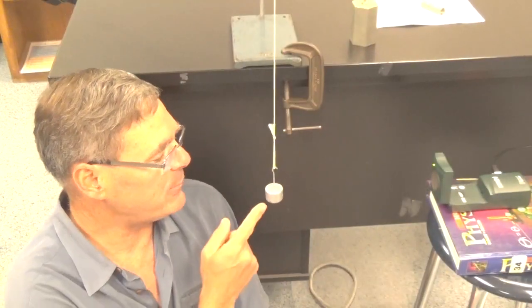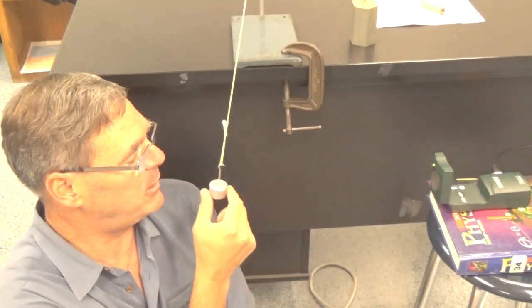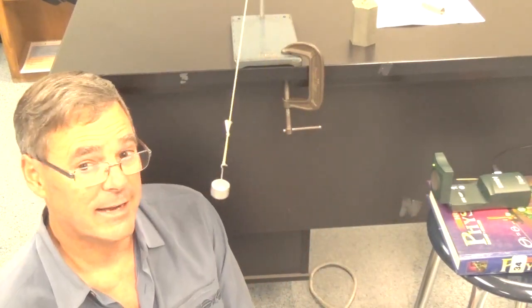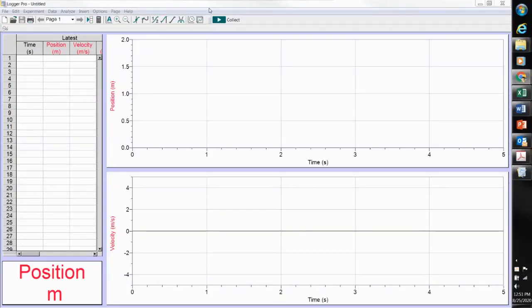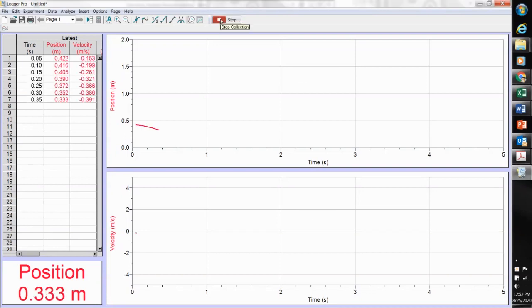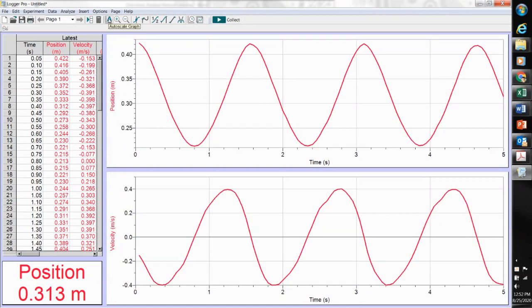Here's our first setup. I've got a pendulum and my motion detector and I'll just set the pendulum in motion and I'll get out of the way of the motion detector. So we'll hit collect and there we see the pendulum in motion and we'll make it a little bigger. And now we've generated position and velocity graphs as a function of time.